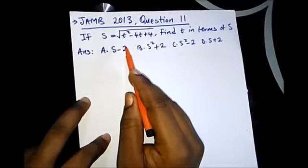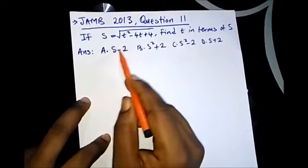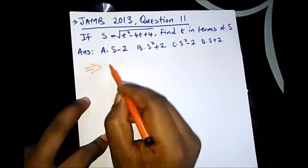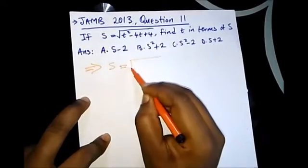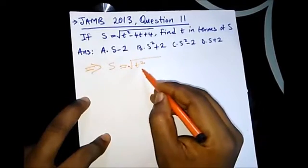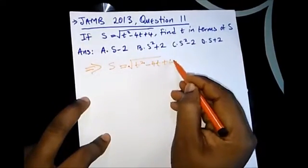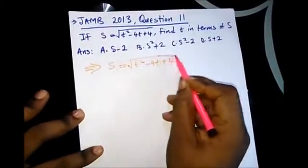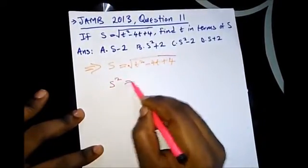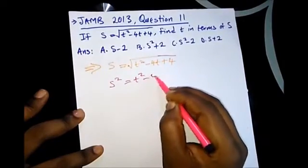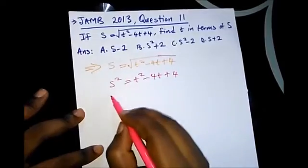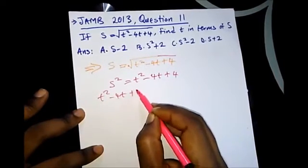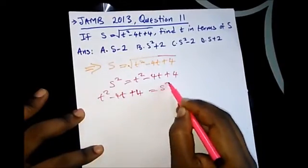From our previous video on change of subject formula, I mentioned that to remove a square root you square both sides. So we have s = √(4t² - 4t + 4). Squaring both sides, the square root cancels out, and we have s² = 4t² - 4t + 4. Let's bring all the values to the right-hand side and put s² here, so: t² - 4t + 4 = s².